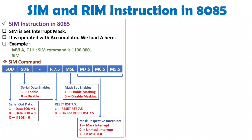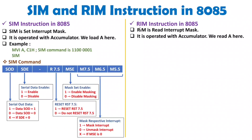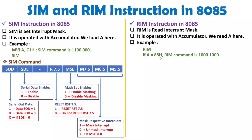So that is all about the SIM command, which handles two things: serial communication and setting interrupt mask. Now I will explain the RIM instruction in 8085. RIM means Read Interrupt Mask. It also operates along with the accumulator — when you write the RIM instruction, you read the accumulator to see the status. For example, if the accumulator equals 88 hex after RIM, that is 10001000 in binary — let's see what that RIM command status means.